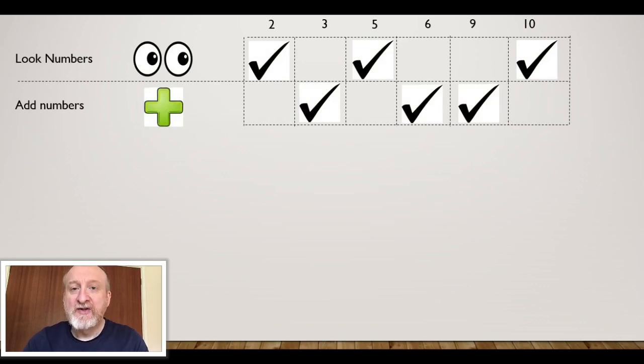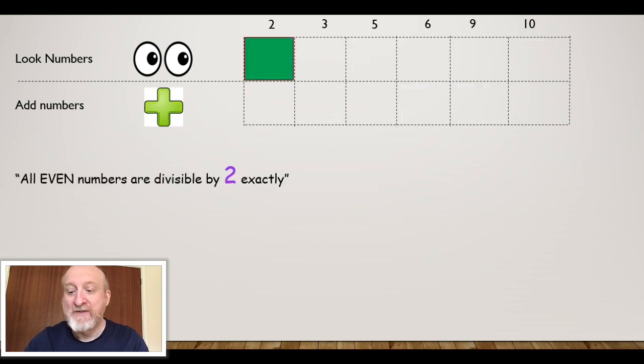And then you've got 3, 6, and 9 which I call the add numbers. Look numbers on the top, add numbers on the bottom line. So let's start with the first number which is 2.